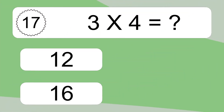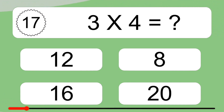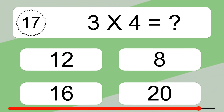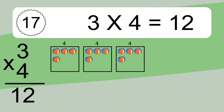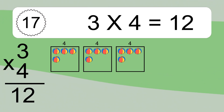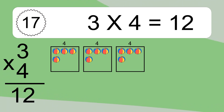3 times 4 equals what? 3 times 4 equals 12. We have 3 boxes, and each box has 4 colorful balls inside. If you count all the balls in all the boxes together, you will have 3 times 4 balls. This equals 12 balls.